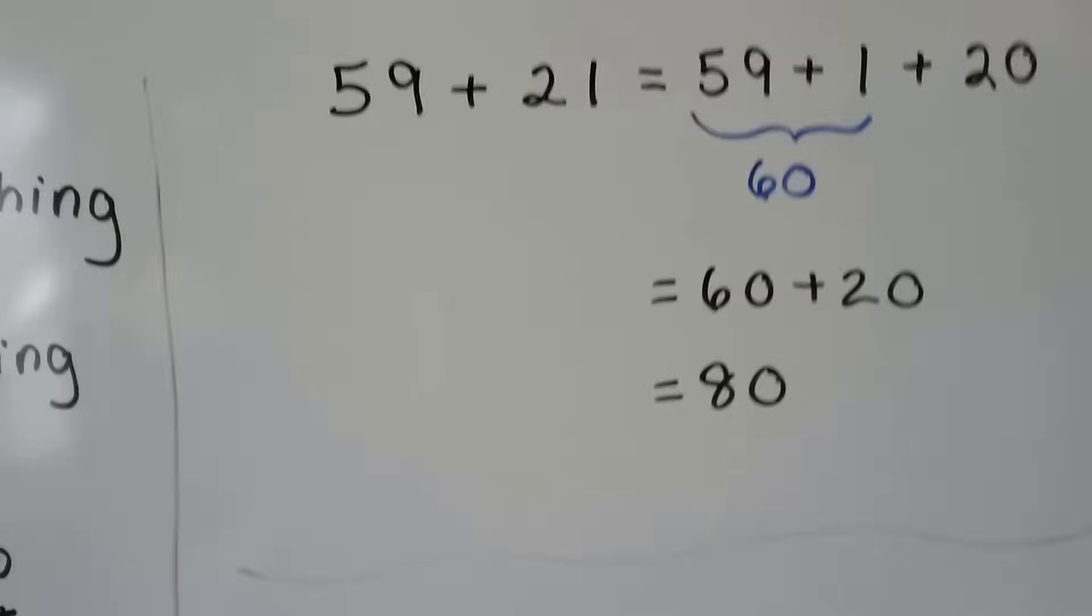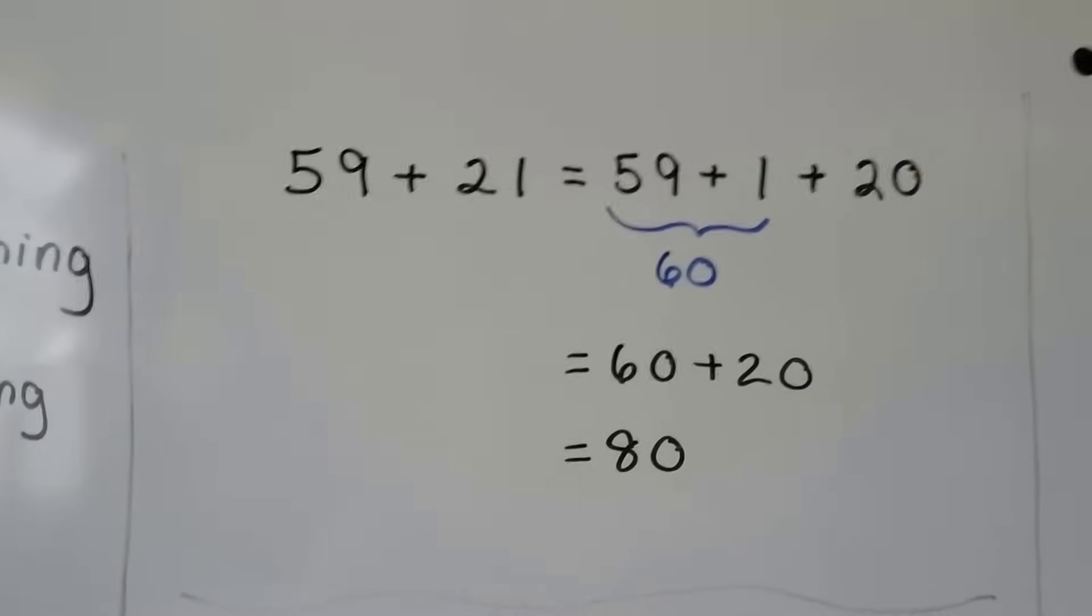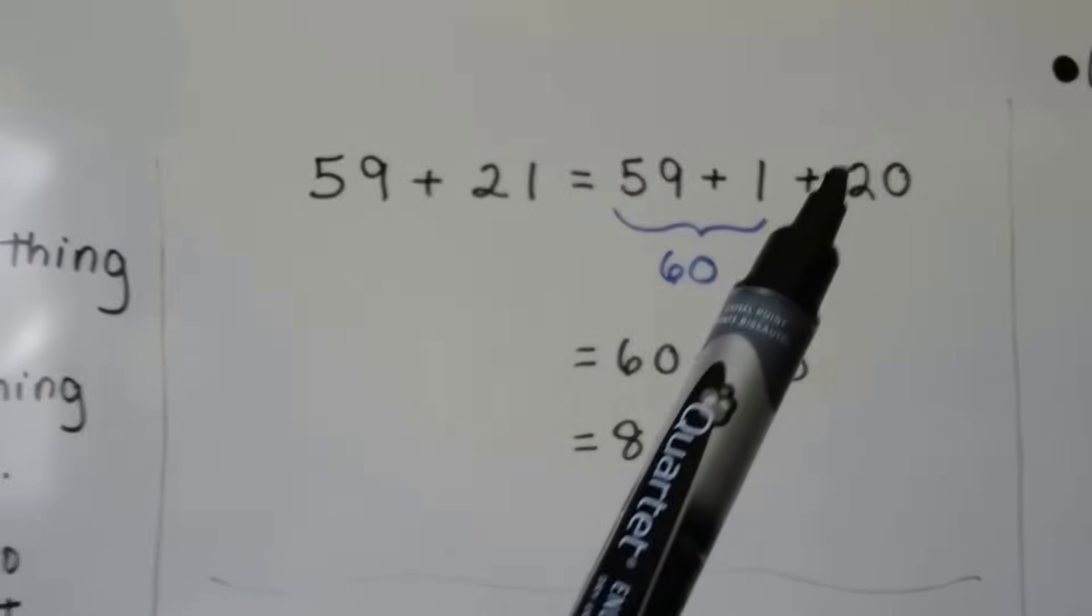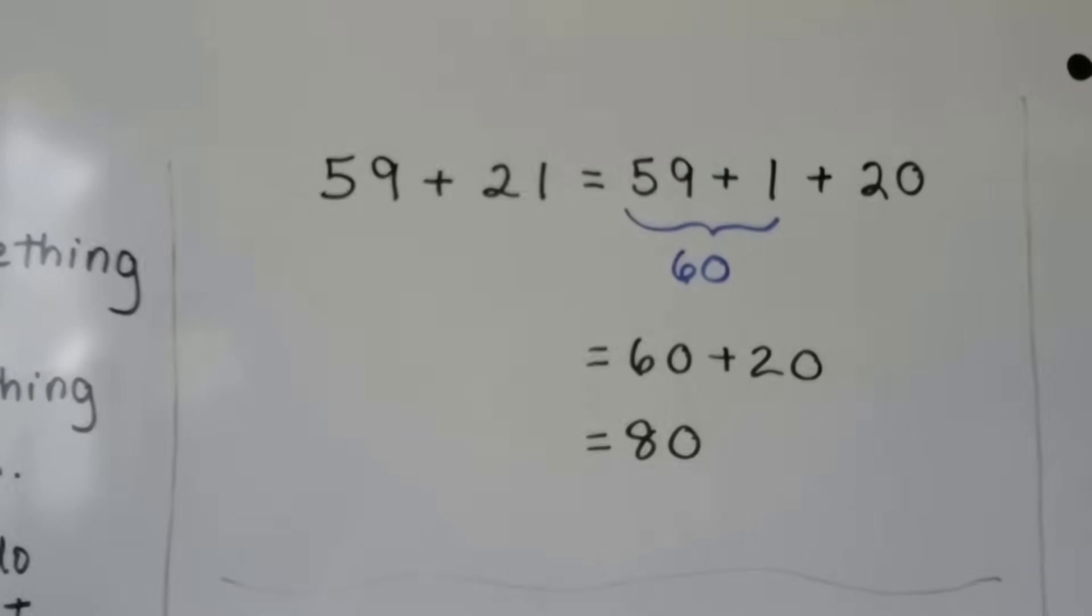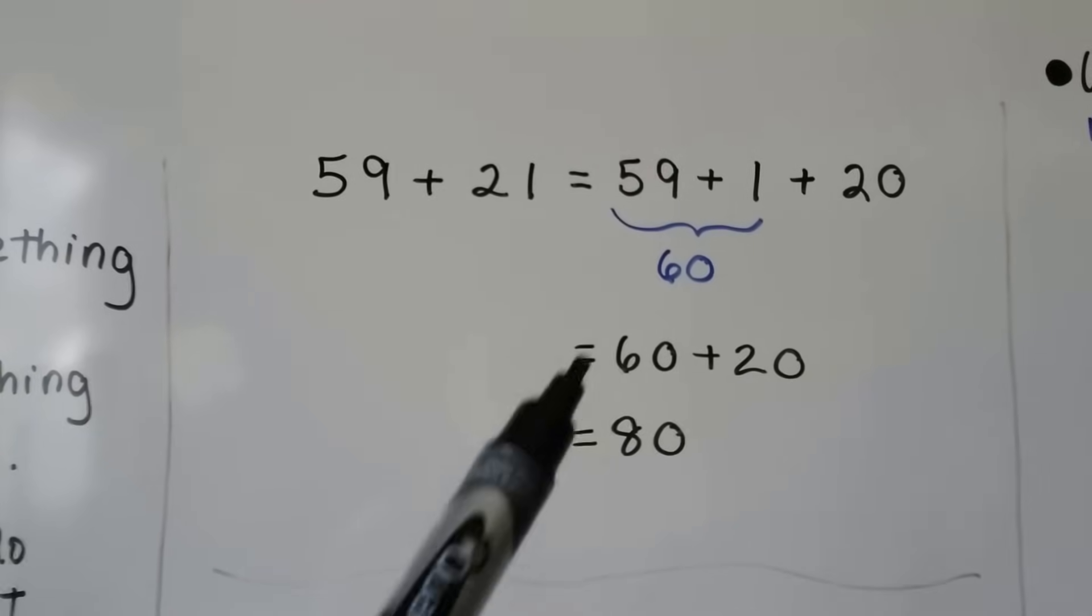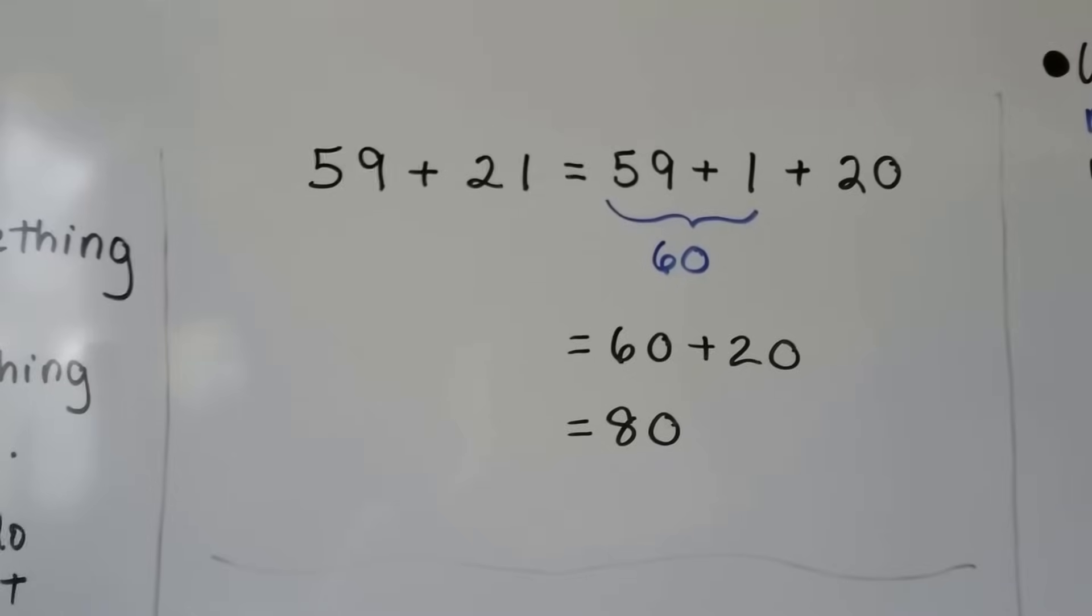Here's more addition. If we have 59 plus 21, it's the same thing as 59 plus 1 plus 20, because that makes the 21. We give the 1 to the 59, make it 60. We end up adding in our head 60 plus 20, which is 80.